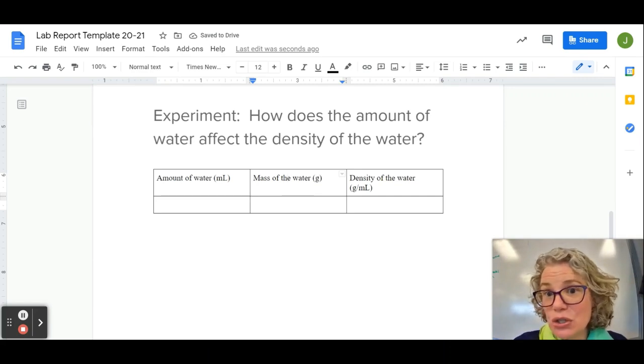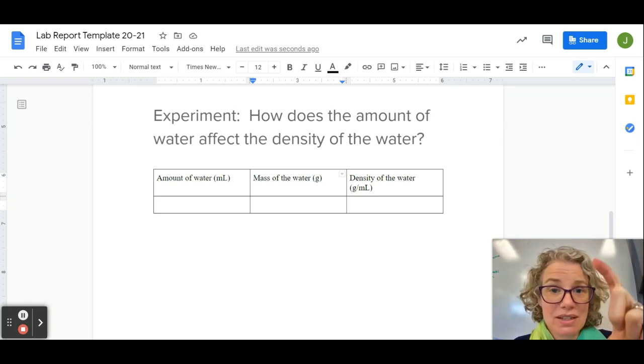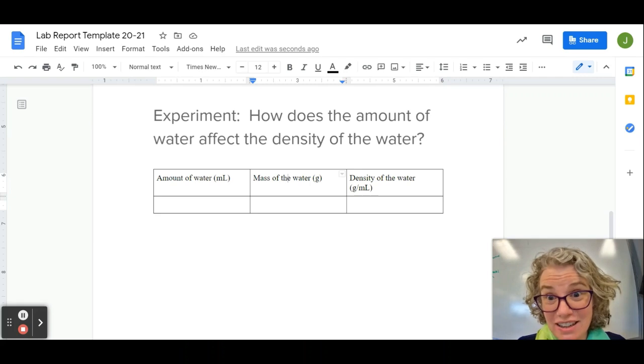If you were to actually do this experiment you would realize, okay, I measure out five milliliters of water. I can put that graduated cylinder on the balance and find its mass, but that's the mass of the graduated cylinder and the water. So I'm actually going to need to find the mass of the graduated cylinder and the water, the mass of the graduated cylinder with the water, and then subtract the mass. So I'm going to actually need a lot of columns to keep track of all these numbers.